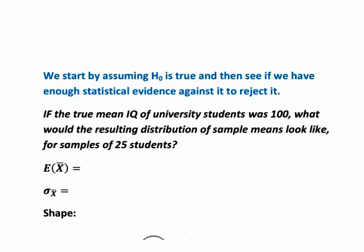In this example, our reasoning would be: if the true mean IQ of university students was 100 as suggested by H0, what then would the resulting distribution of sample means look like for samples of 25 students? The mean of the sample means in this sampling distribution would be the same as the hypothesized population mean of 100. The standard deviation of the sample means — that's the standard error of the mean — is sigma divided by the square root of the sample size, so here that's 15 divided by the square root of 25.